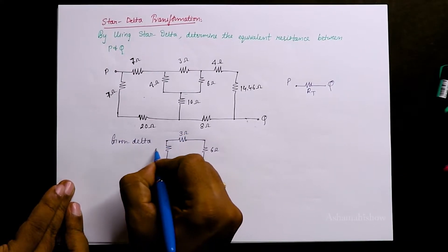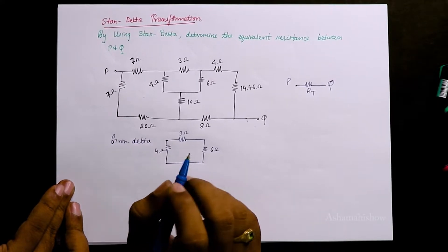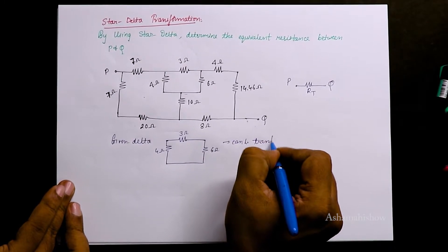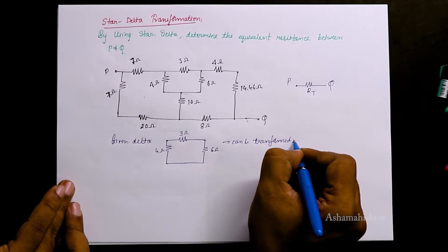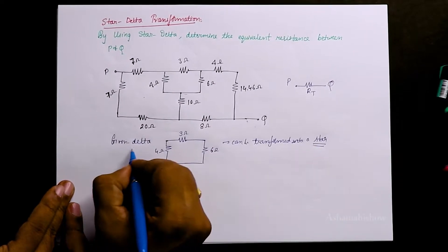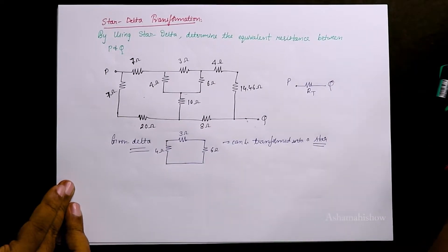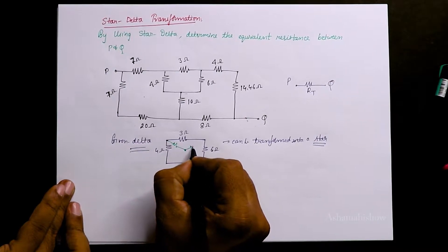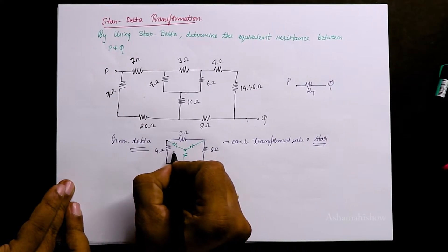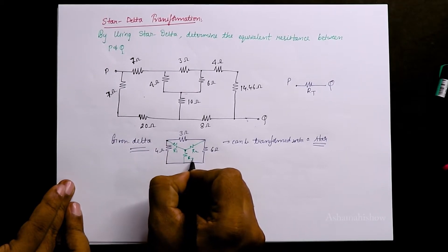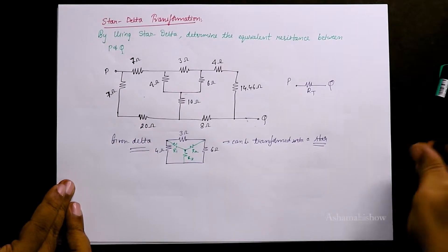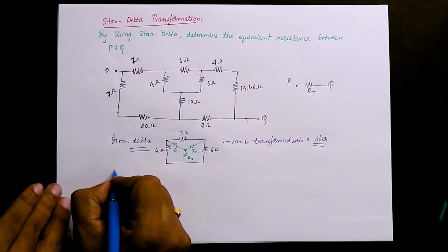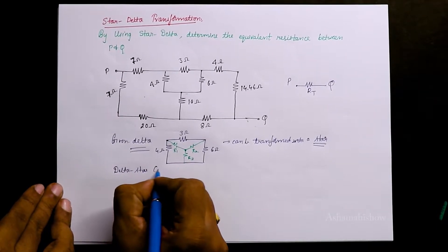The central delta has 6 ohms, 3 ohms, and 4 ohms. This is a closed loop and it can be transformed into a star. We keep a node in the middle and connect all the elements to it, forming R1, R2, R3. So we have formed a new star inside the delta — this is a delta-to-star connection.